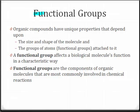Off of these carbon backbones, we hang functional groups. The organic compounds that we're going to study all have unique properties that depend upon the size and shape of the molecule, which is determined by the carbon backbone, and the types of functional groups that are attached to them. A functional group affects a biological molecule's function in a characteristic way. In our next podcast, we'll examine these functional groups and what type of molecules they're most frequently found on.